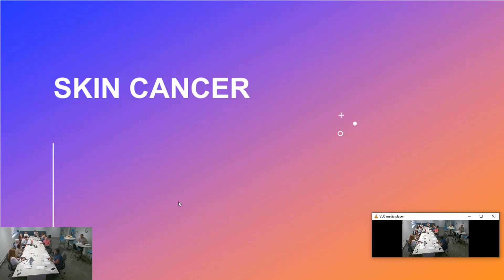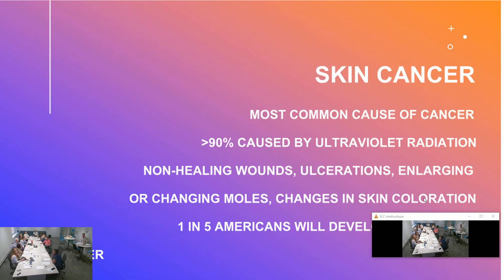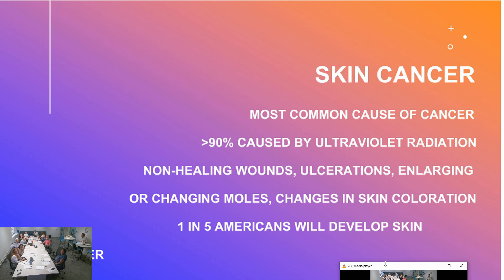So this month is Sun Awareness Month, so we thought we'd do skin cancer. Skin cancer is the most common type of cancer in humans in the United States. Greater than 90% of all skin cancers are caused by ultraviolet radiation — sun exposure and, to a much lesser extent than it used to be, tanning beds. They typically present as non-healing wounds, ulcerations, enlarging or changing moles, or sudden abrupt change in skin coloration in a localized area. One in five Americans will develop skin cancer at some point.